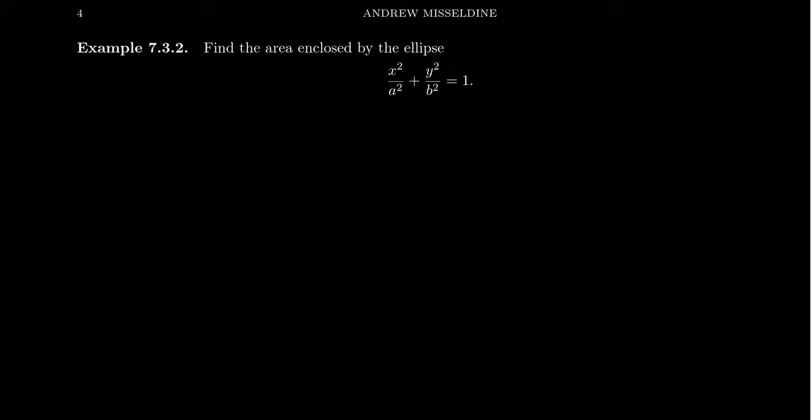In this video, we're going to find the area enclosed by the ellipse x squared over a squared plus y squared over b squared equals 1. Now, an ellipse is essentially a generalization of a circle.